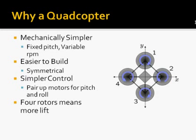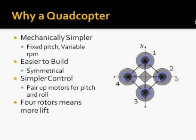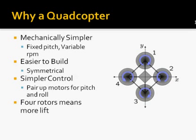The reason why we chose a quadcopter over a plane or a regular helicopter was that we thought it was mechanically simpler. Since we're not MEs, we don't know how to build devices that could vary the pitch of things, so we wanted to keep it simple. We know enough about motors and speed controllers that we just have to vary the RPM. Another reason was that it's easier to build because it's symmetrical — four arms and four pieces of everything, so they're all precise relative to each other. It's a simpler control since all we're controlling is the RPM of the motors. Also, as opposed to a regular helicopter which has one main rotor, this has four main rotors, giving us more lift.